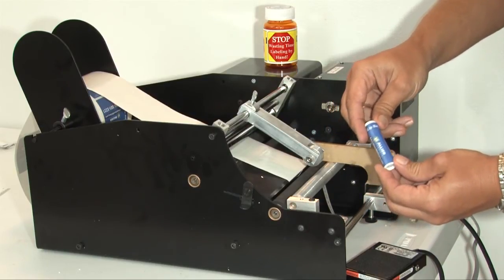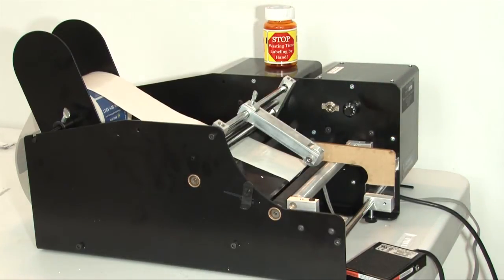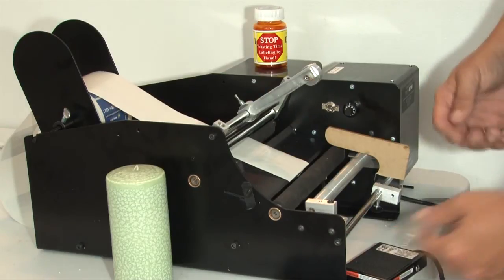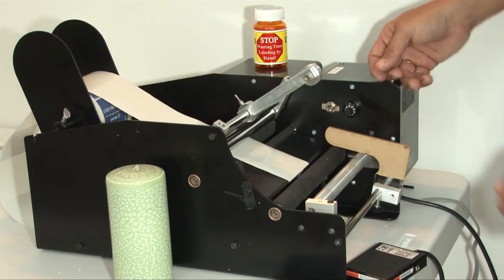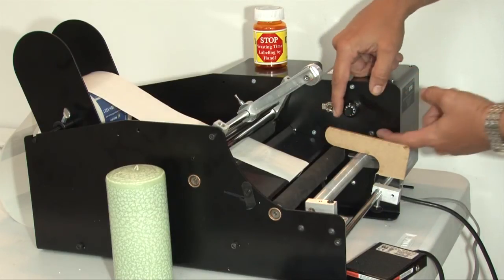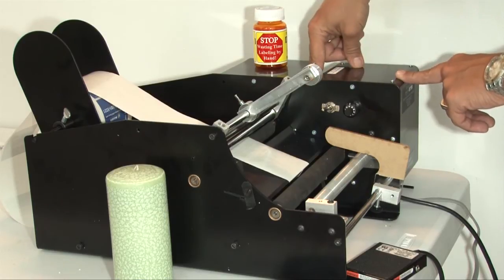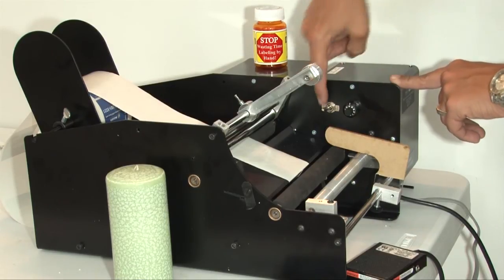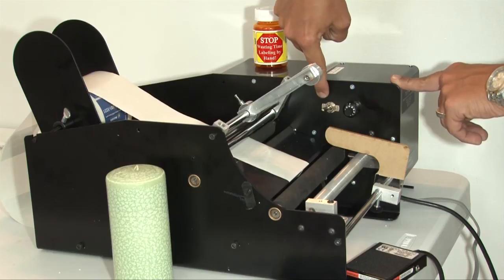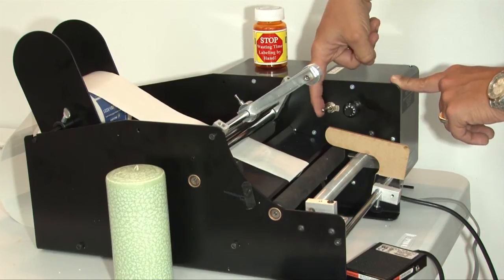But as you can see, you can label a lip balm tube very quickly. If you've purchased your machine with the Bottlematic 2 option or 2 label option, it is very important to know that you can only switch this from one or two labels while the machine is off. If you switch from one to two labels while the machine is on, the machine will malfunction.